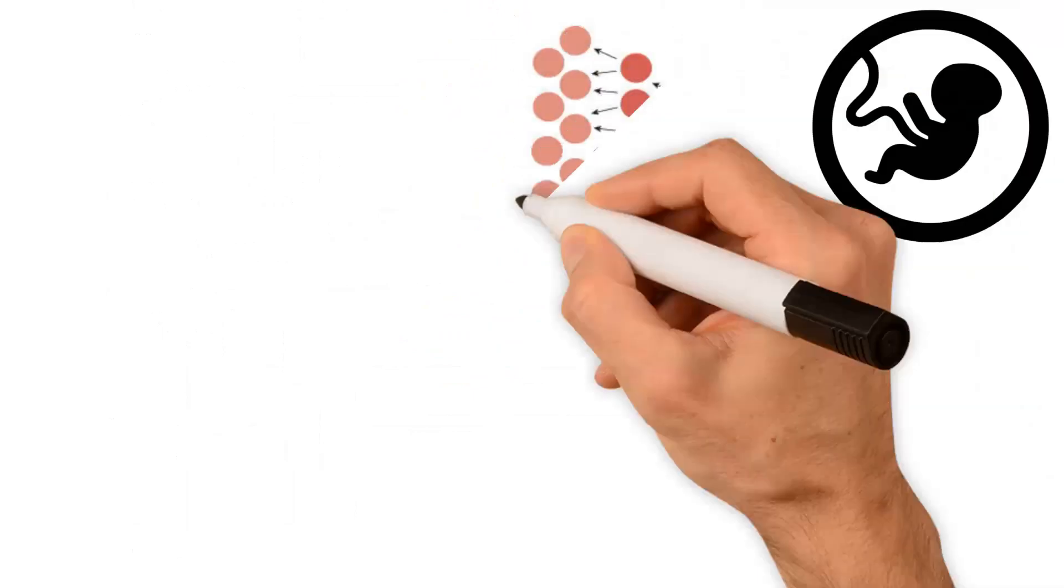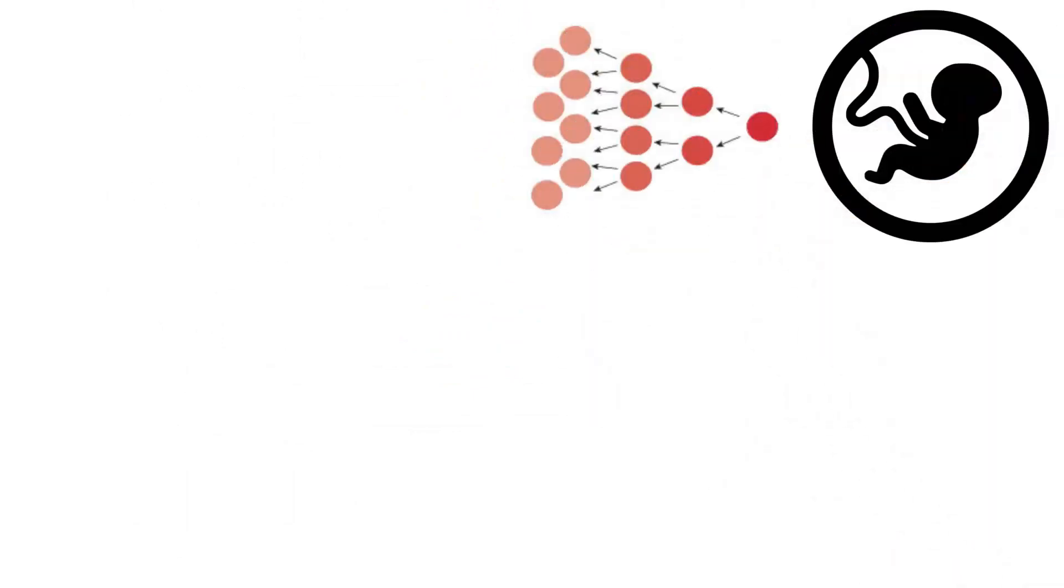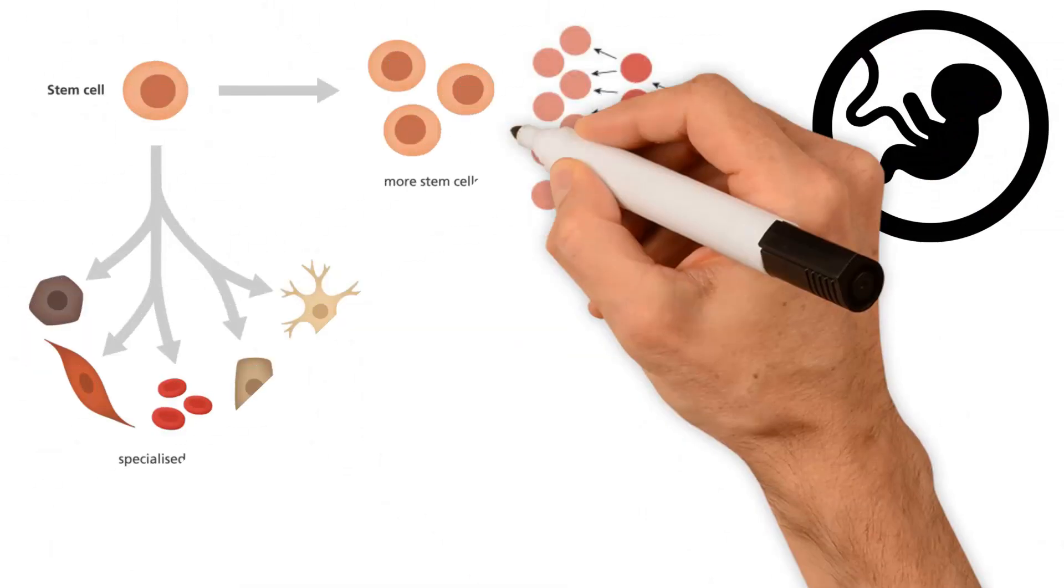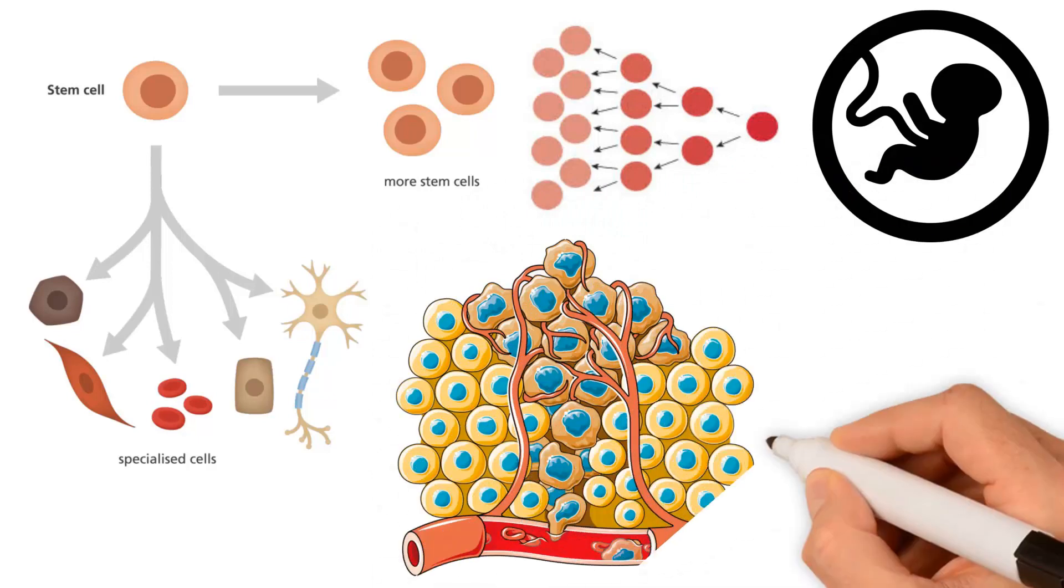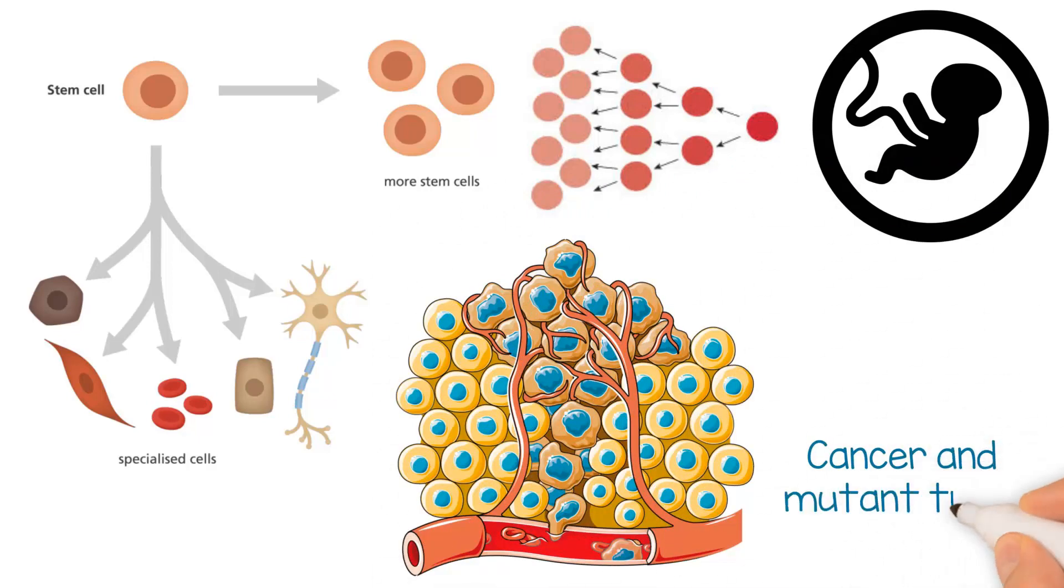Fetal stem cells have an advantage over adult stem cells because they can proliferate at a higher rate and they grow tissue by transforming into numerous different types of cells. These stem cells, however, aren't as stable. They are known to cause cancer and grow mutant tissue.